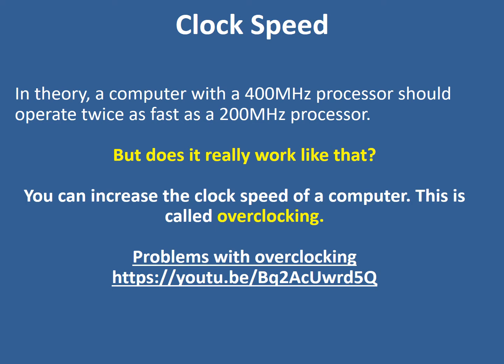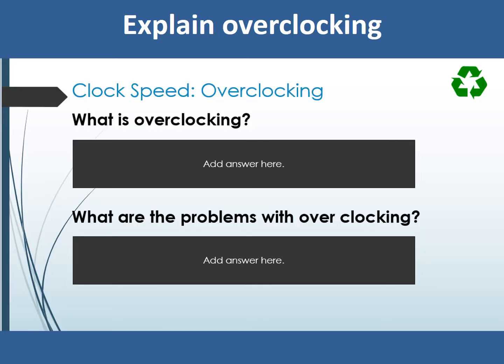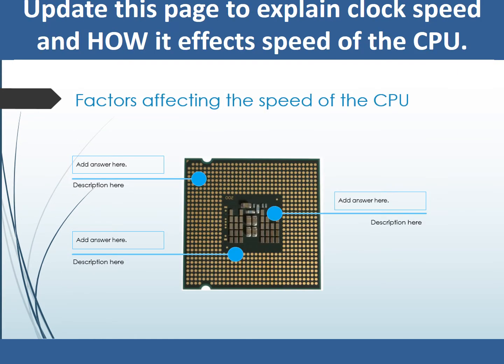We can increase the speed of the clock within any computer — this is called overclocking — but it's generally not done. A processor is tested to work at its optimum speed. If we increase the speed too much it causes too much heat, and this can cause things to burn out. So we have to be very careful if we overclock a CPU. I want you to re-listen to the part about overclocking and answer: what is overclocking and what problems might it cause? Then go to your workbook and fill in the details about clock speed and how that affects the speed of the CPU.